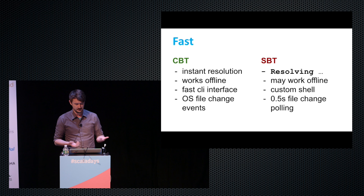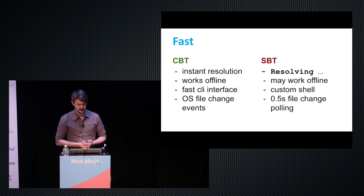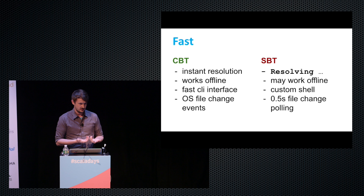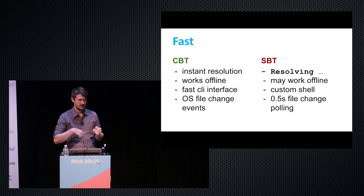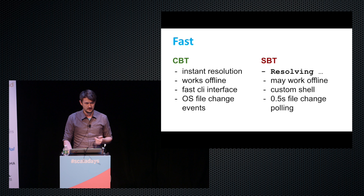Why is CBT fast? We know that SBT uses Ivy, and Ivy takes quite a while for resolving things sometimes. In CBT, there's its own resolver — it's basically instant, as we'll see in a minute. It also works properly offline. CBT also has a very fast command line interface. You don't have a custom shell that you need to start into and you don't have multiple instances running. There's one instance permanently running and you connect to it with a client that immediately terminates. And CBT uses native operating system events to detect file changes rather than polling the file system.